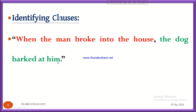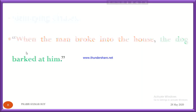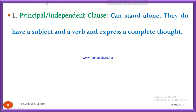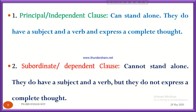On the other hand, 'the dog barked at him' can easily express the meaning, so this is called a principal clause. The definition of principal clause is that it can stand alone; it has a subject and verb and expresses a complete thought. A subordinate clause also has a subject and verb, but it cannot stand alone and cannot express a complete thought. The difference is that one can stand alone and express a complete thought, while the other cannot.